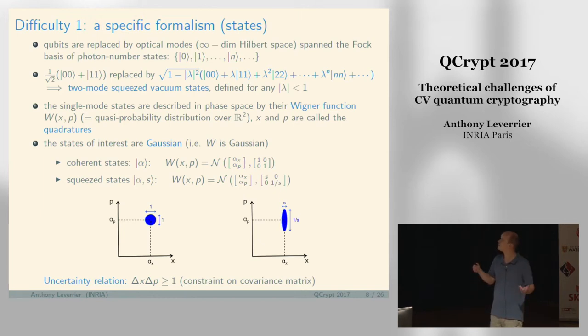With this formalism, the states that are interesting are very nice and correspond to Gaussian states. If you look at single mode continuous variable states, you have basically two families of nice states.